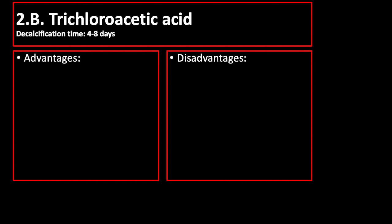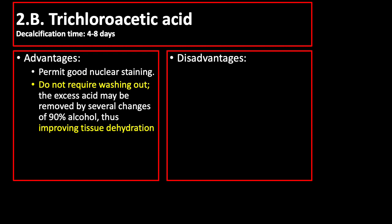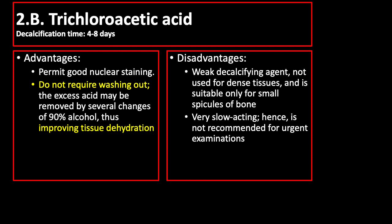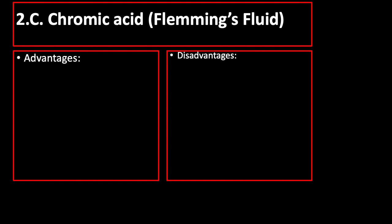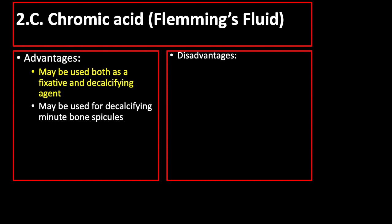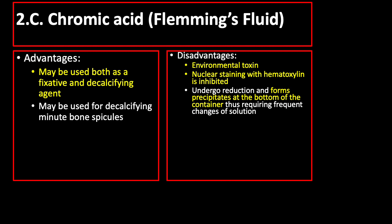The next weak acid is trichloroacetic acid with a decalcification time of 4 to 8 days. Its advantages include that it permits good nuclear staining and does not require washing out. The excess acid may be removed by several changes of 90% alcohol, thus improving tissue dehydration. The next weak acid is chromic acid, or Fleming's fluid, which may be used both as a fixative and decalcifying agent. Disadvantages include that chromic acid is an environmental toxin, nuclear staining with hematoxylin is inhibited, and it forms precipitate at the bottom of the container, requiring frequent changes of solution.